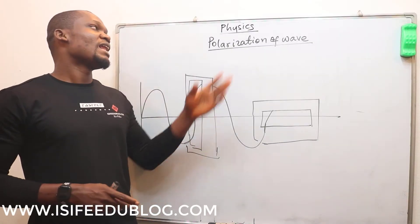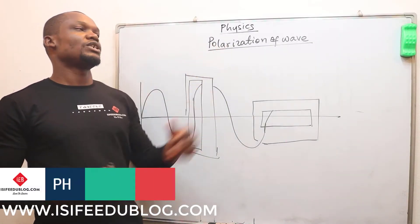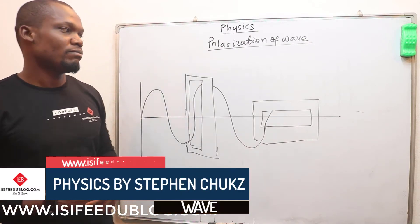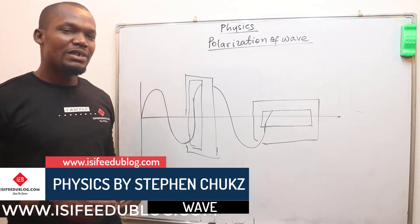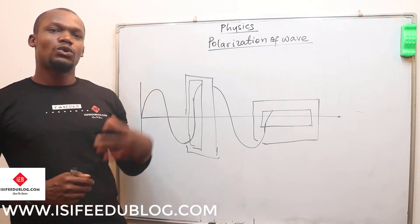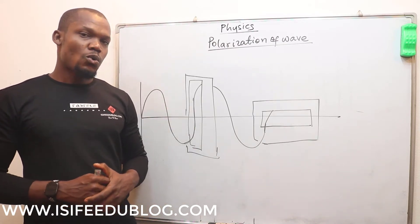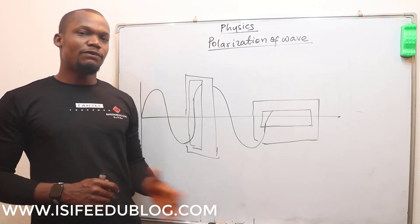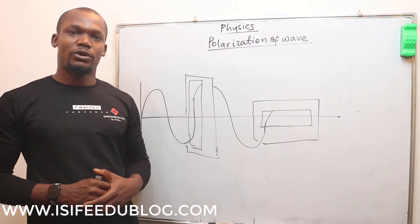Okay, now we talk about the last characteristics of wave, which is polarization of wave. What is polarization of wave? Polarization of wave is the phenomenon of wave whereby only waves which travel in the same plane are produced. What this means is that if you change the plane of the wave, the wave stops at that point and we call that point the point of polarization.